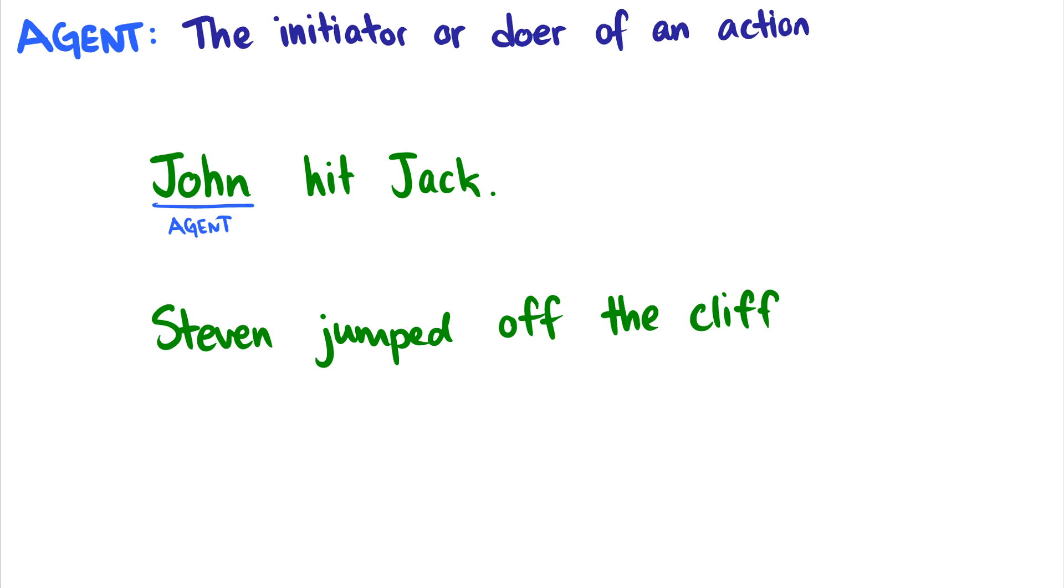Stephen jumped off the cliff. Well, jumped is a verb, and a jumper has to be someone who does something. So Stephen has to initiate the jumping. Stephen has to be doing the jumping. So Stephen is the agent of our sentence.